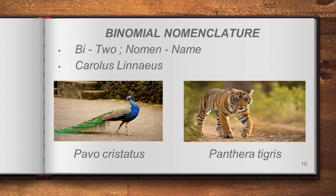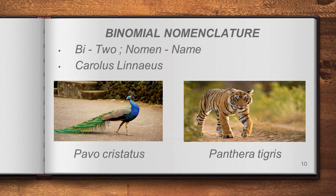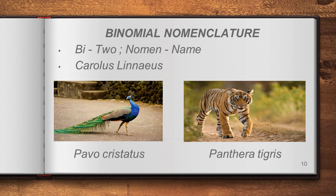The first method is binomial nomenclature. 'Bi' means two and 'nomen' means name, so each organism must have two names — a genus name and a species name. The genus name must begin with a capital letter and the species name with a small letter. For example, our national bird, the peacock, has the scientific name Pavo cristatus, and our national animal, the tiger, is Panthera tigris.